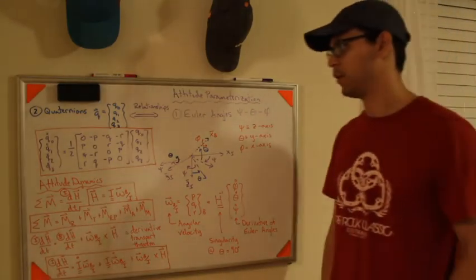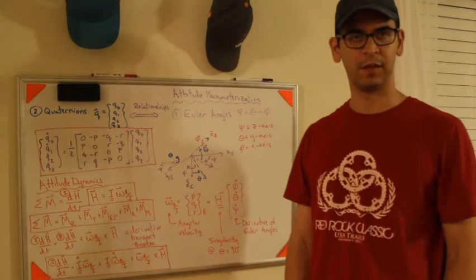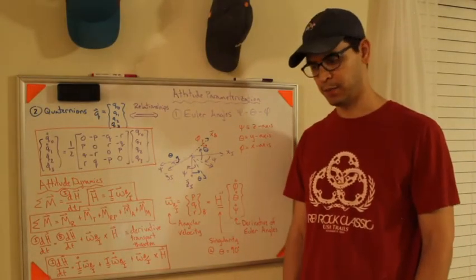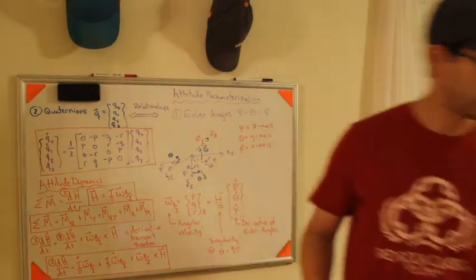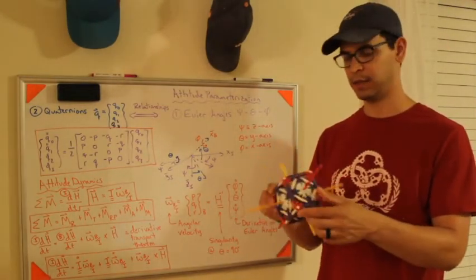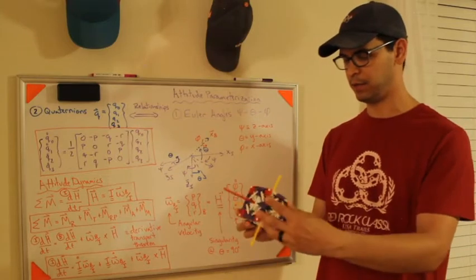Alright, so this is probably going to be the most math-heavy video, unfortunately, because attitude dynamics is pretty complex. Where's my satellite? Your satellite is tumbling, it's rotating all about three axes.